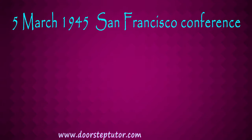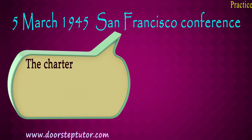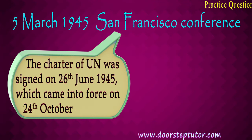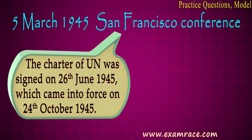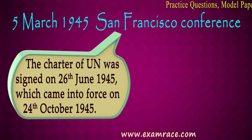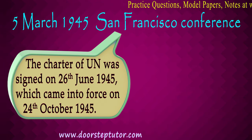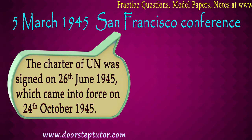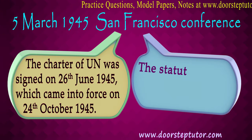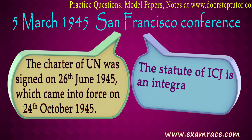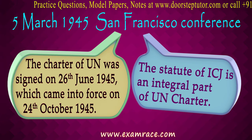On 5th March 1945, the San Francisco Conference took place, where the UN Charter was signed on 26th June 1945 and came into force on 24th October 1945. The Statute of the International Court of Justice (ICJ) was also formed as a very integral part of the UN Charter.